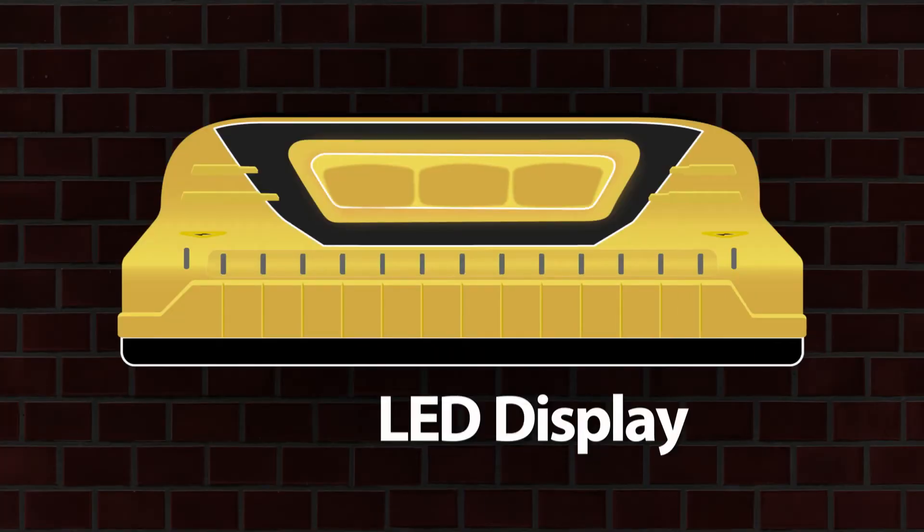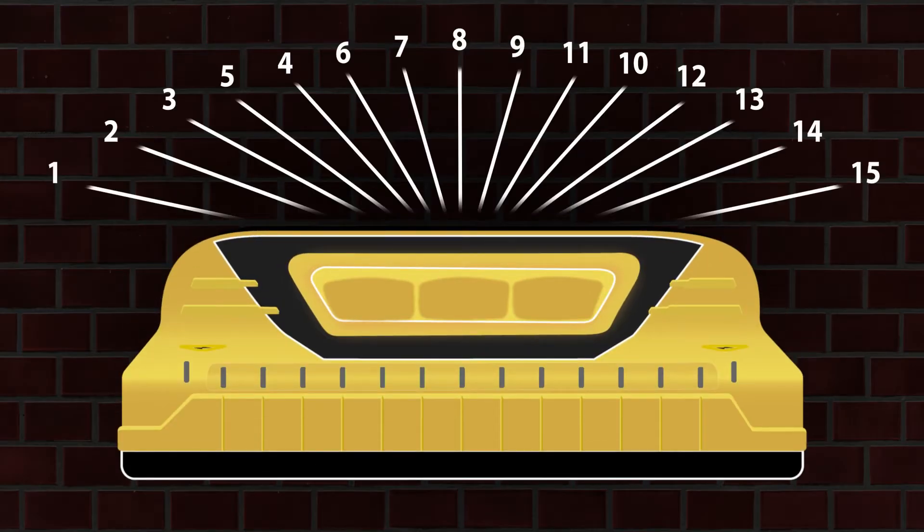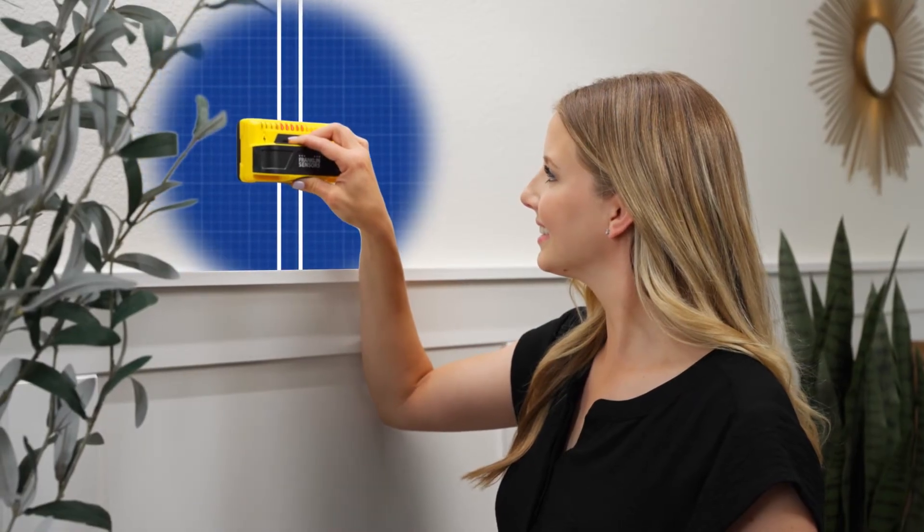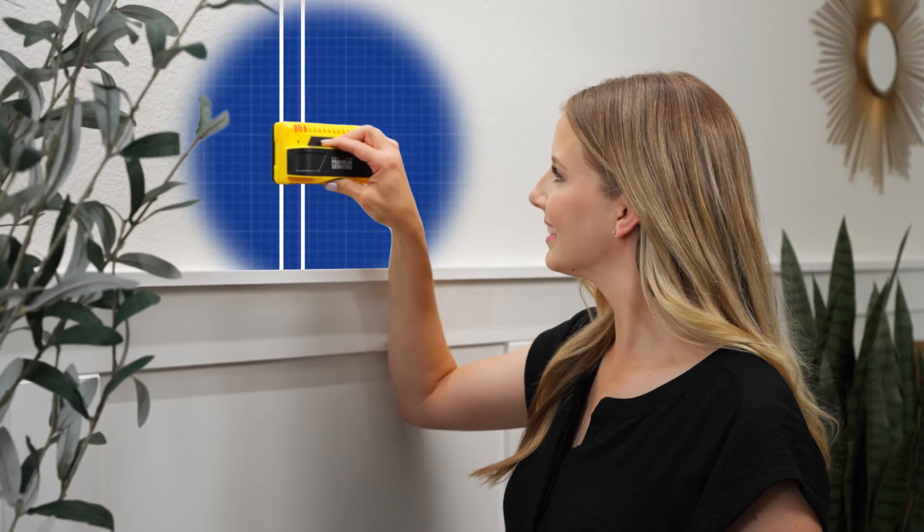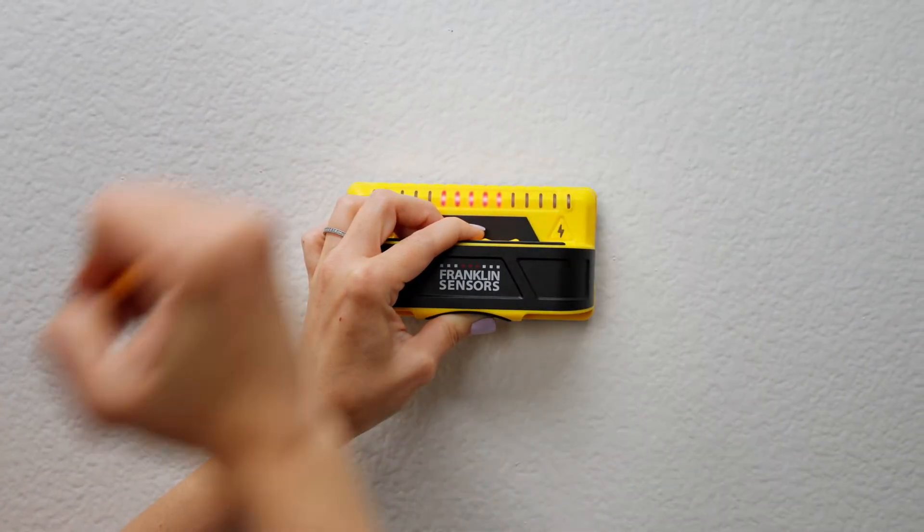The M150 has an enhanced precision LED display. With 15 tightly spaced LEDs, the M150 more precisely identifies studs. When you move the unit back and forth, the ProSensor M150 continues to track the location of the stud, which makes it easy to instantly see the edges and the center of the stud.